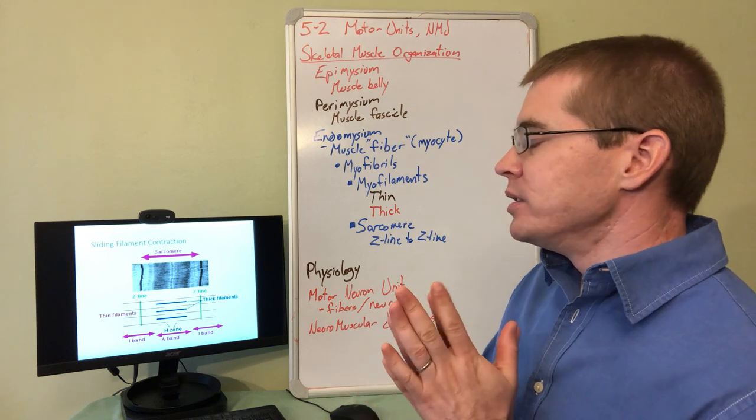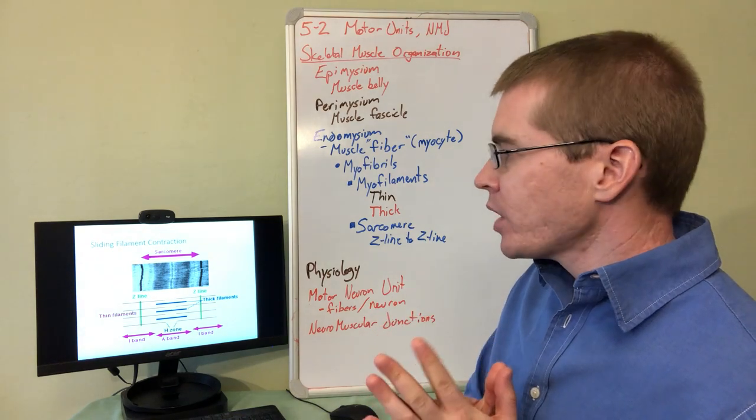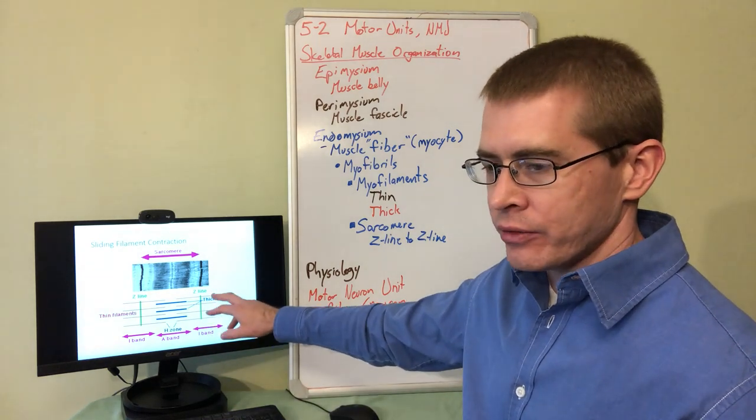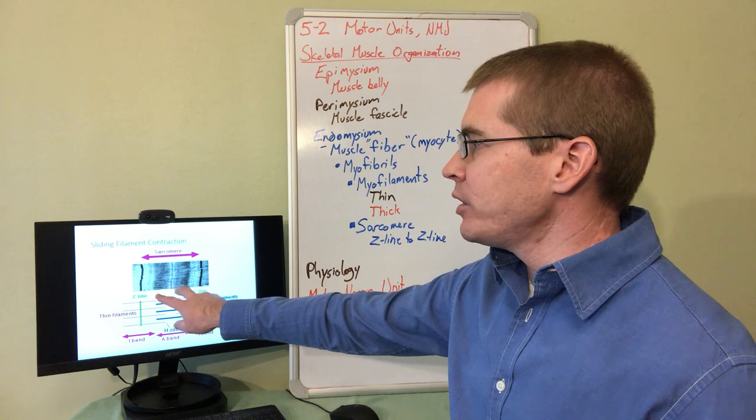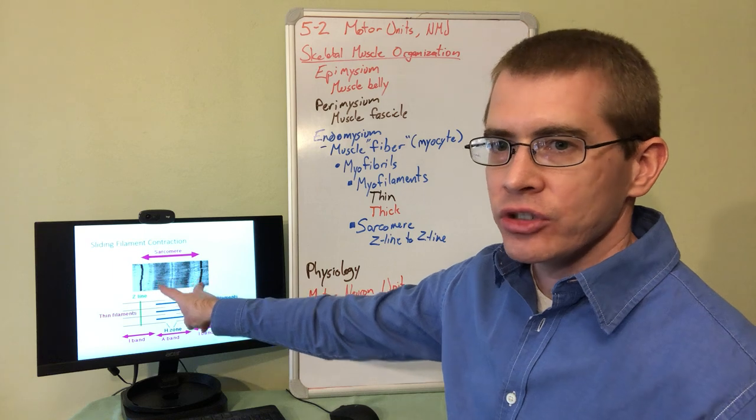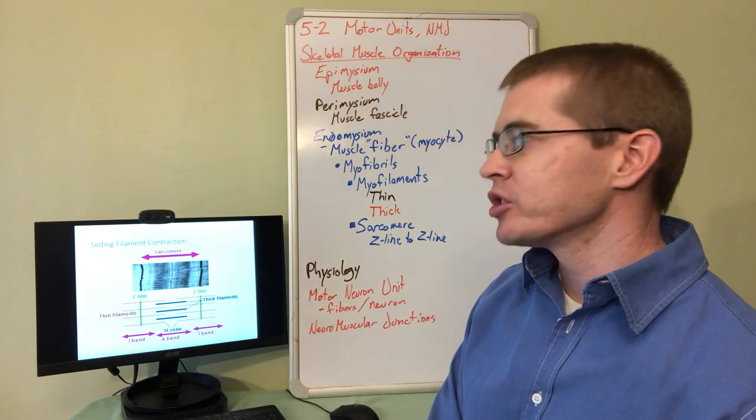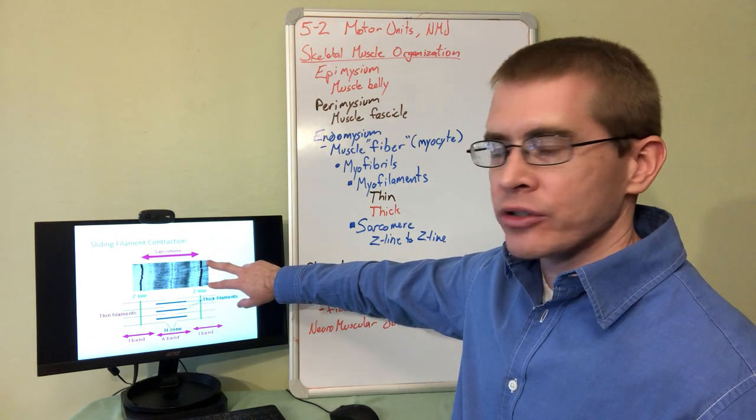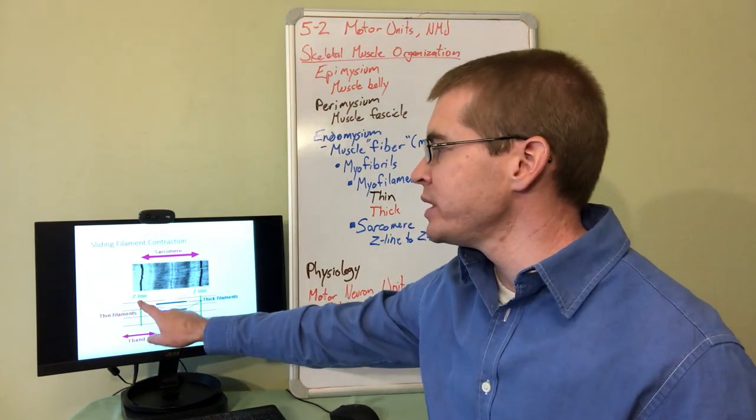When we take a closer look at the filaments within these myofibrils, we see they're composed of many different types of filaments. Thin and thick filaments are the two main components. These thin and thick filaments form individual contractile units called sarcomeres. These sarcomeres are the fundamental element and the smallest element of the contractility of a myocyte. This is what a sarcomere looks like under an electron microscope. The sarcomere is the area between two Z lines. We can see one Z line here, one Z line here.